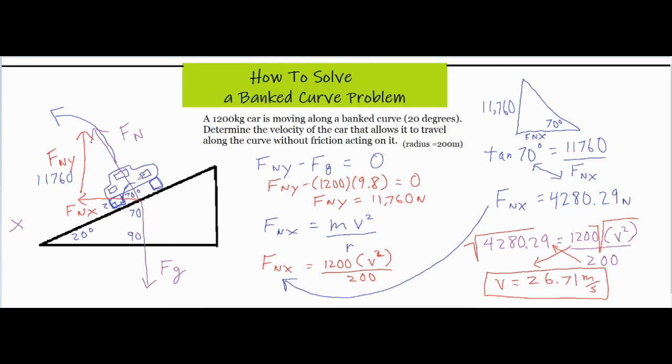On the other hand, if you're going faster than 26.71 meters per second the car would have the tendency to go up the hill and then the force of friction would be pointing in the opposite direction to oppose the slide. That would be a different type of problem. If you do come into a problem that has friction acting on it, that would be dependent on how fast it's going in relation to this velocity.